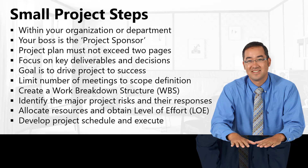Next, identify the major project risks and the corresponding responses. It's important to communicate potential risks to your project sponsor and document those responses. Once you're ready to execute, allocate resources — identify key skilled team members from the development team, QA department, or BA area — and obtain their level of effort, meaning what it will take for them to successfully complete the project, even if the costs are internal to the organization.